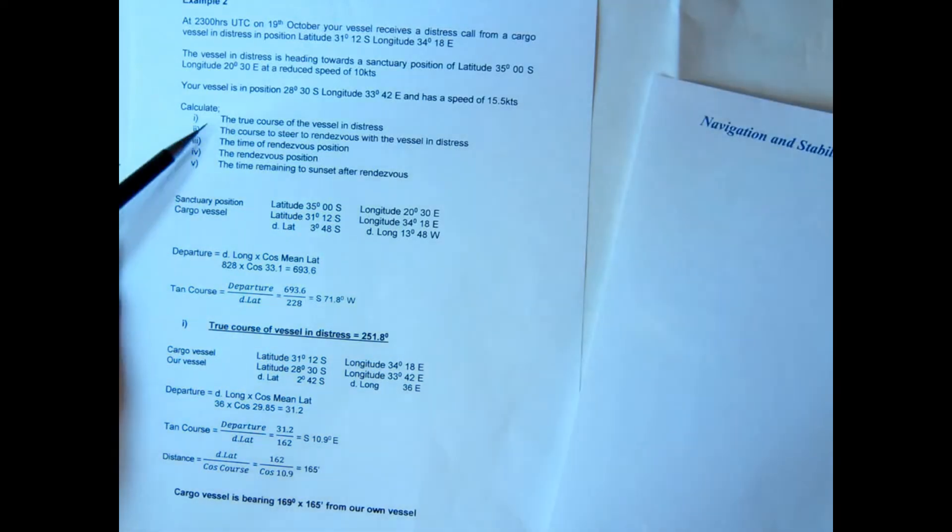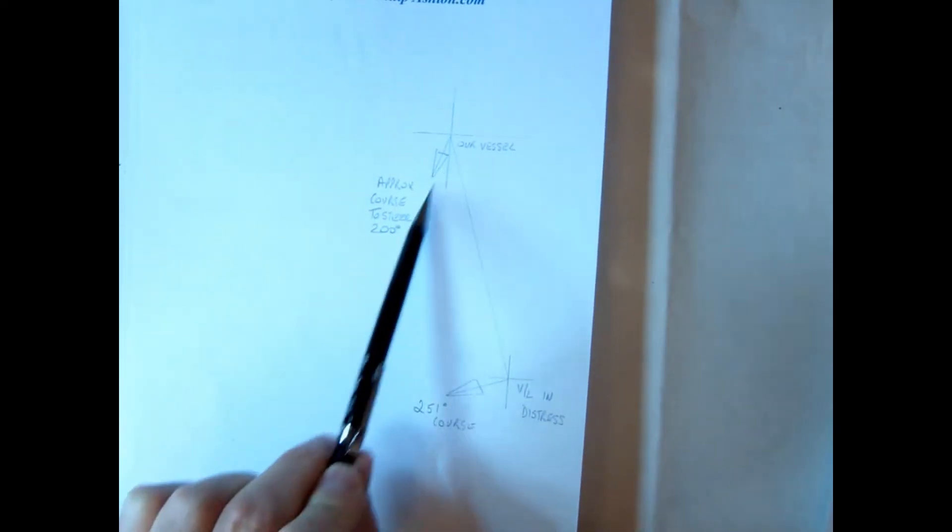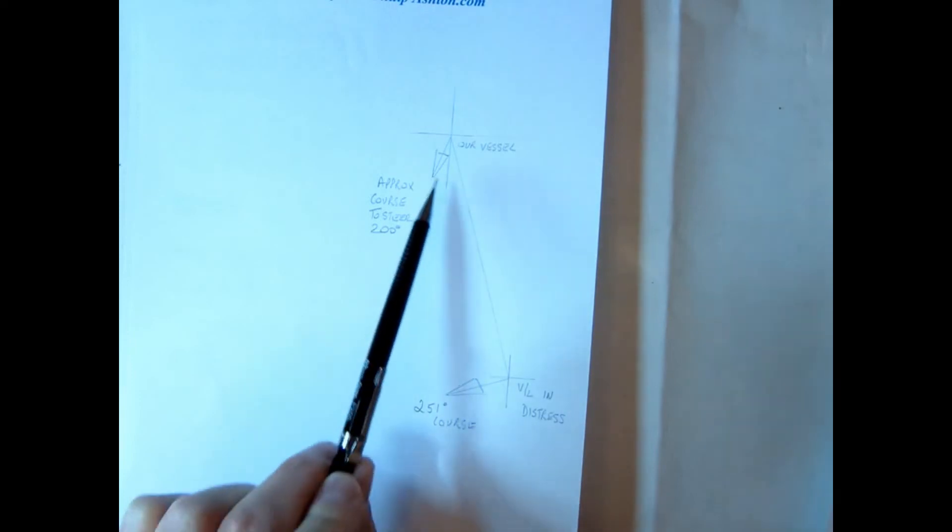We've got the true course of the vessel in distress and we want the course to steer to rendezvous. Before we work that out, I've done a quick sketch here. There's our vessel, there's the vessel in distress. That vessel's going on that course that we worked out there, 251.8.